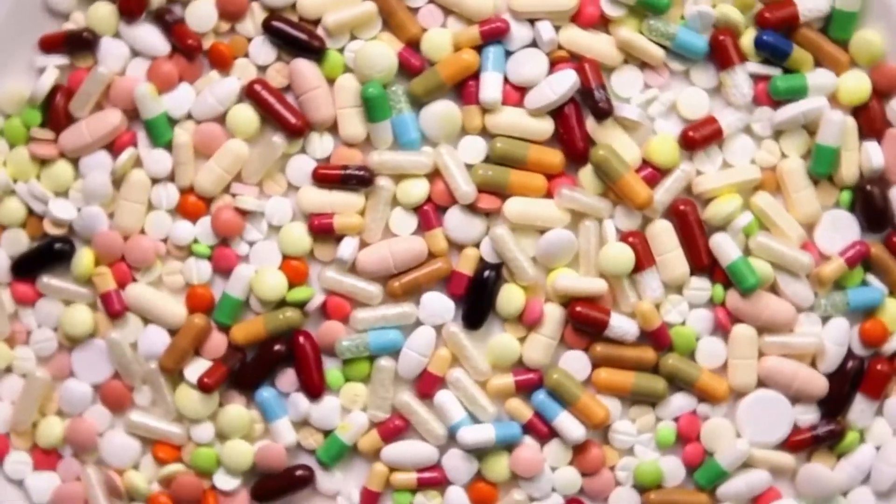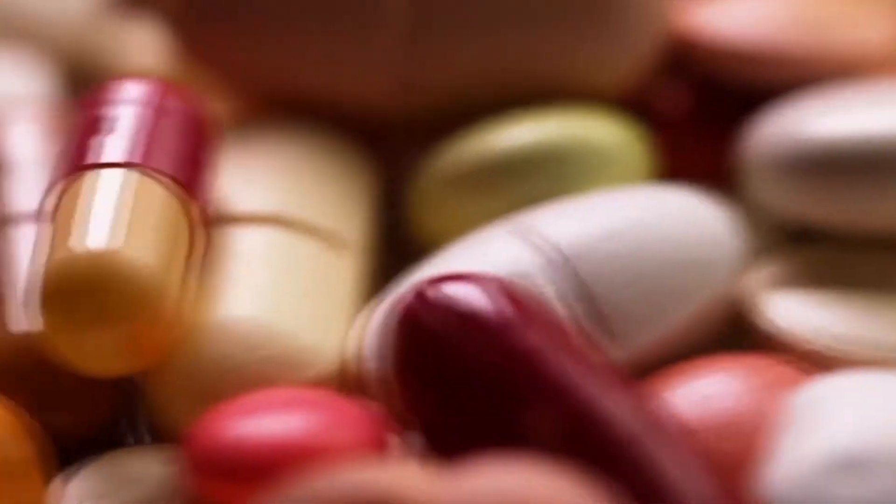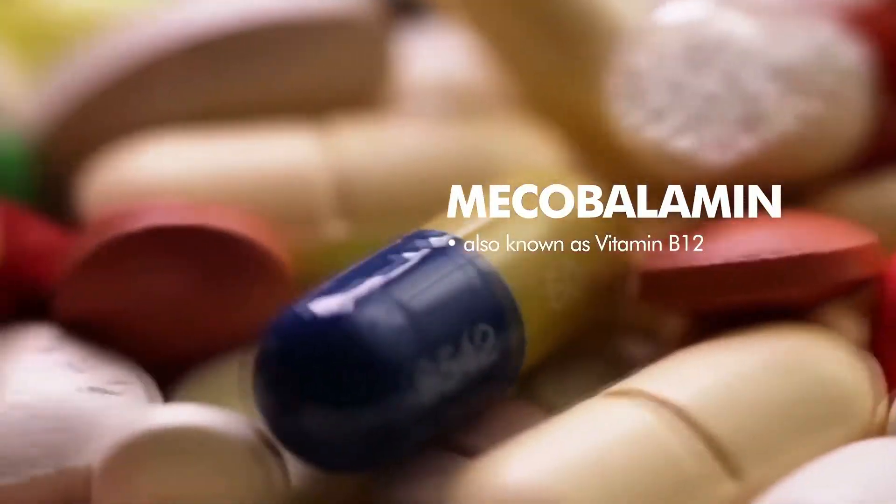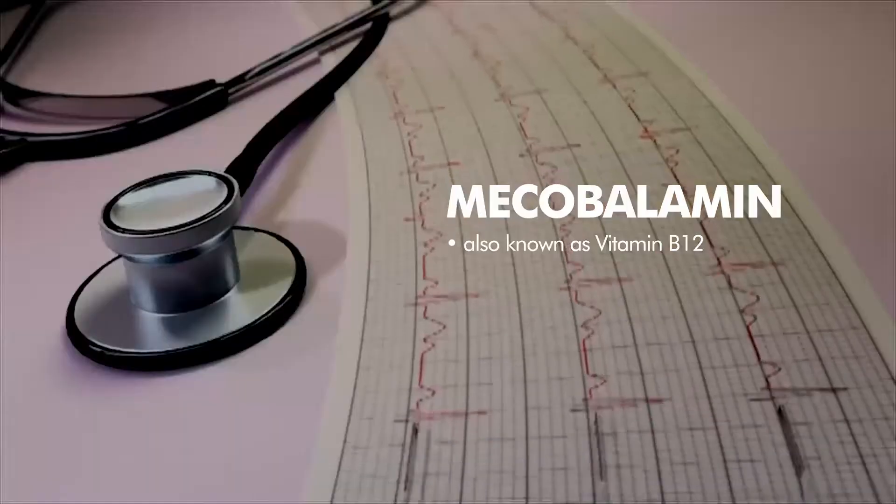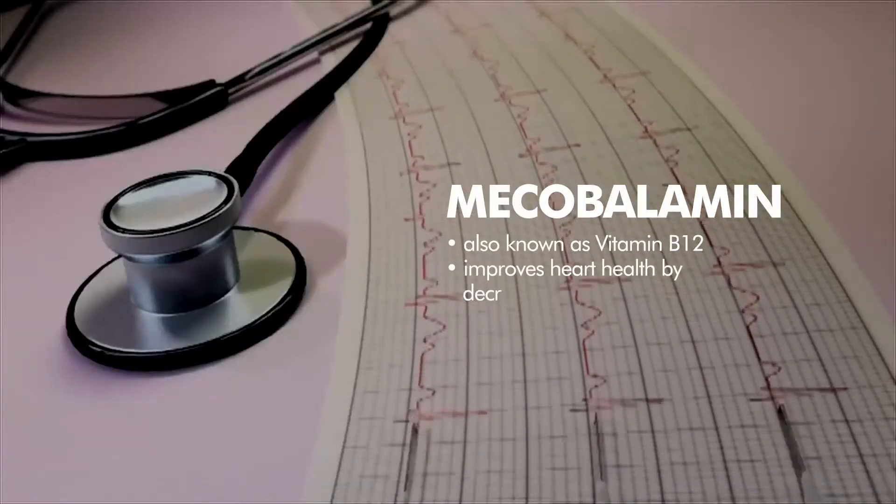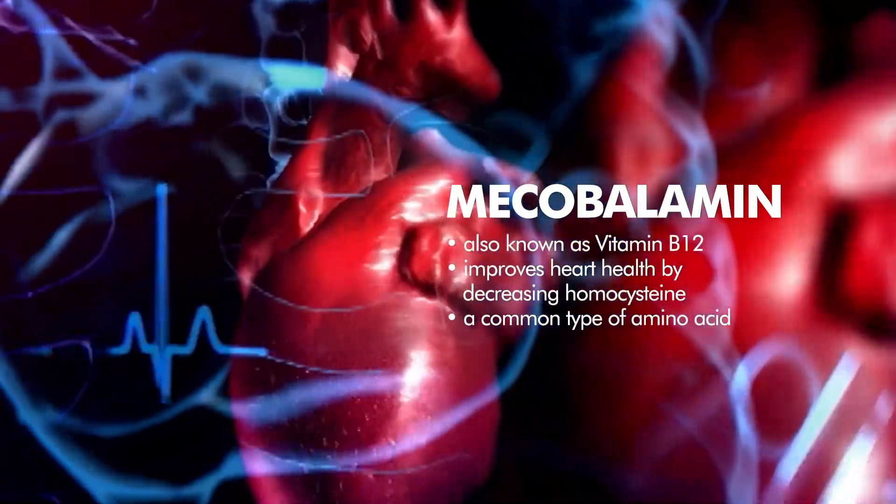Also, in the treatment of neuropathy, experts have relied on a host of vitamin B complex. Mecobalamin, otherwise known as vitamin B12, is the most commonly used. Mecobalamin also improves heart health by decreasing homocysteine, a common type of amino acid that is associated with the increased risk of heart disease.